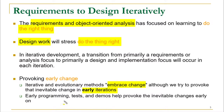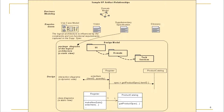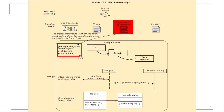We make sure that inevitable and large changes are done in early iterations. Early programming, tests, and demos help provoke changes early, so any major change can be seen and addressed early through prototypes. The logical architecture is always influenced by constraints and non-functional requirements captured in the supplementary specifications, which provide input to the package diagrams of the logical architecture. Package diagrams provide the static view, interaction diagrams provide the dynamic view, and class diagrams also provide the static view of the system.